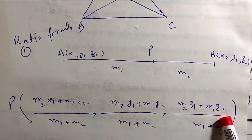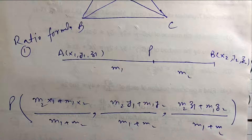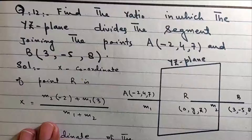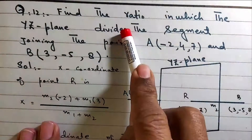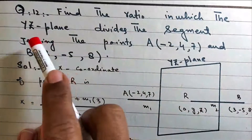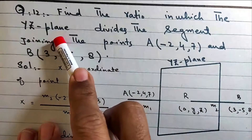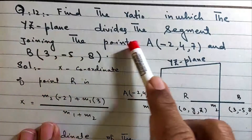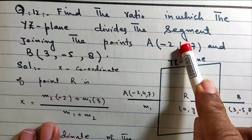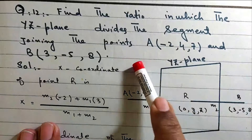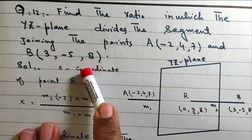Find the ratio in which the YZ-plane divides the segment joining the points A and B.